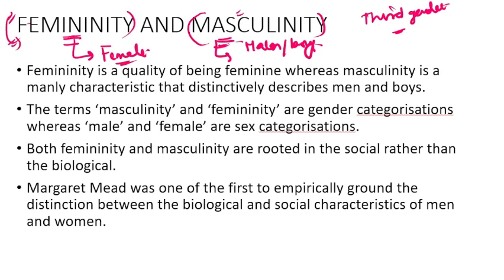Why did I include these terms? Because you have to know them. These are two terms — they are not sex categorizations, these are gender categorizations. That means biologically, we don't use femininity and masculinity. These terms get their roots from society; they are society's terms, not nature or biological difference. Margaret Mead was one of the first to empirically ground the distinction between the biological and the social characteristics of men and women.